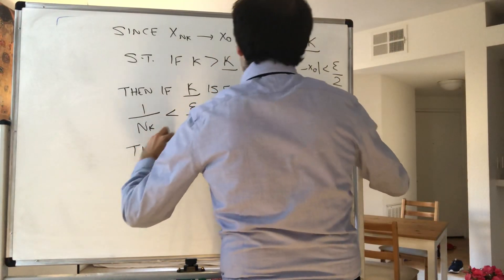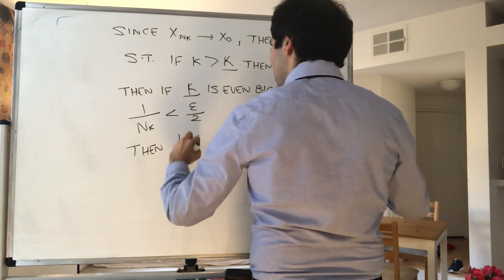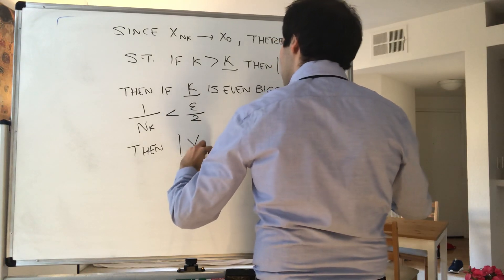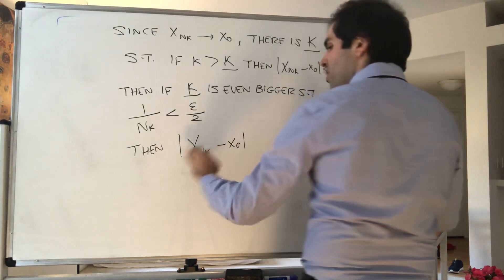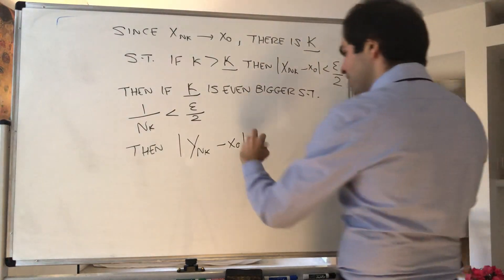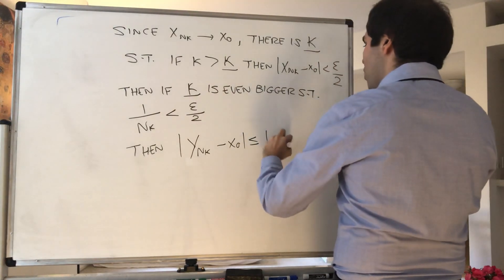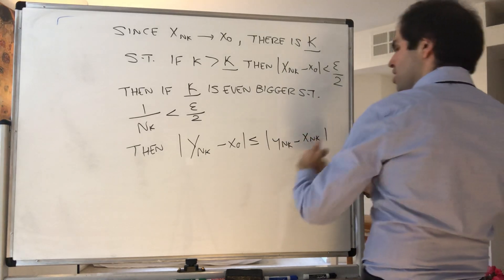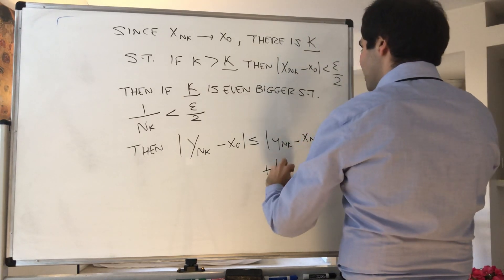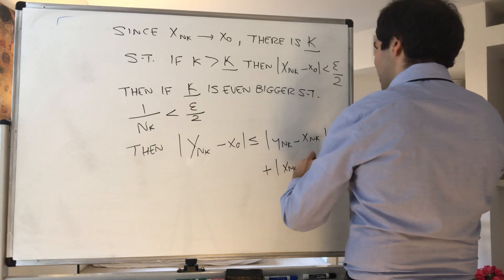Then now let's look at the difference. So we have, again, |y_nₖ - x₀|. We want to show this is less than epsilon, but this is less than or equal to |y_nₖ - x_nₖ| + |x_nₖ - x₀|.